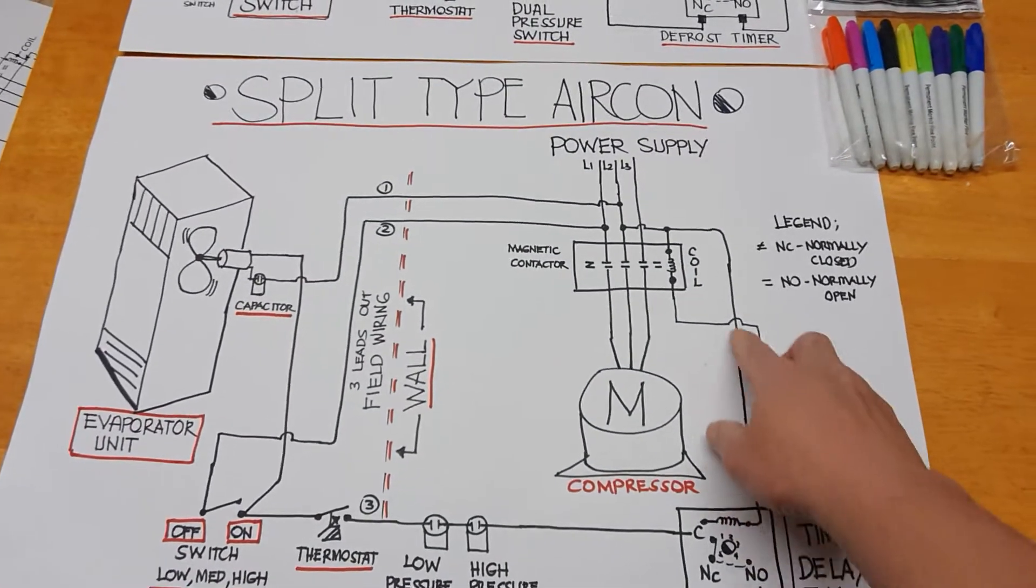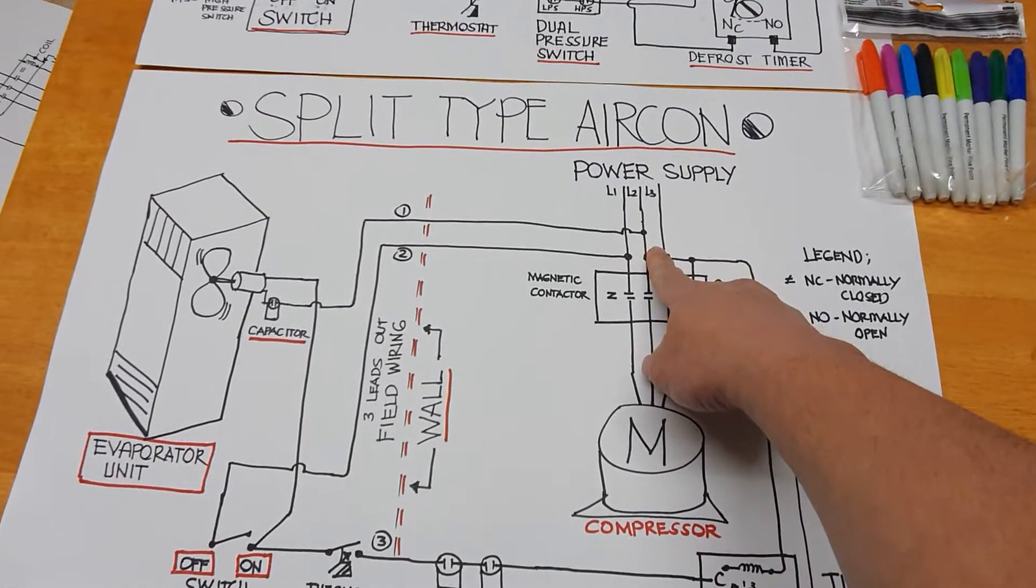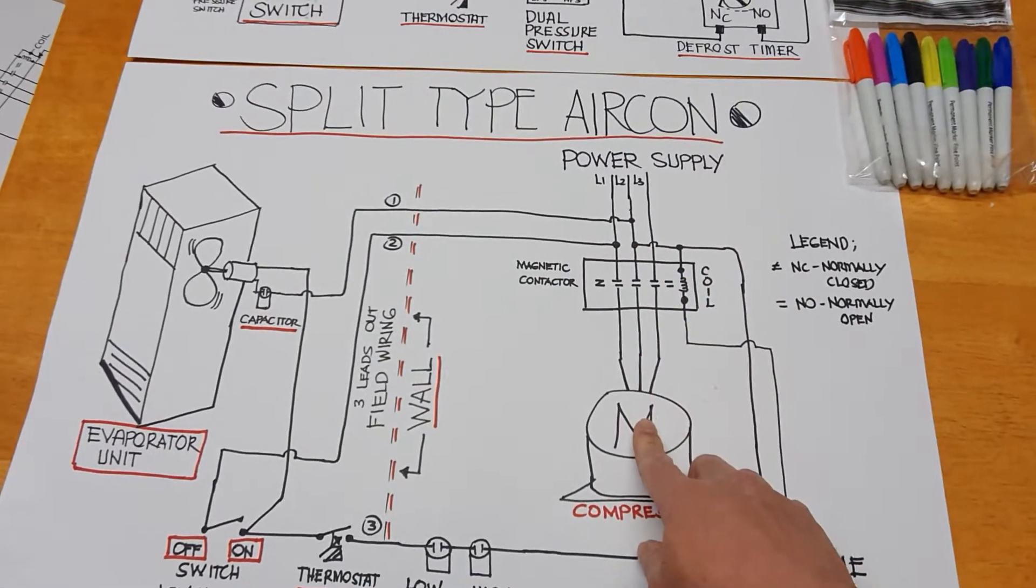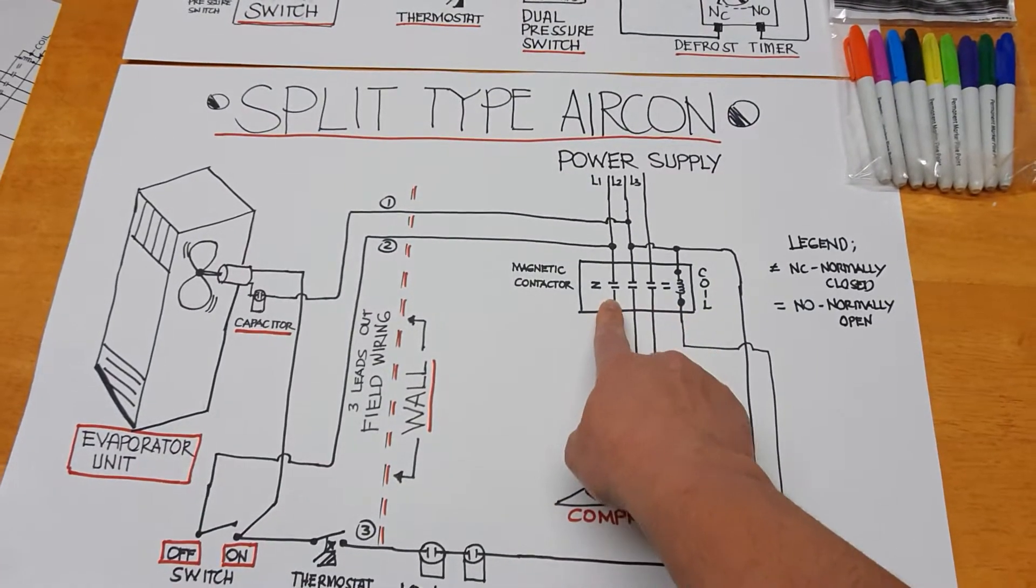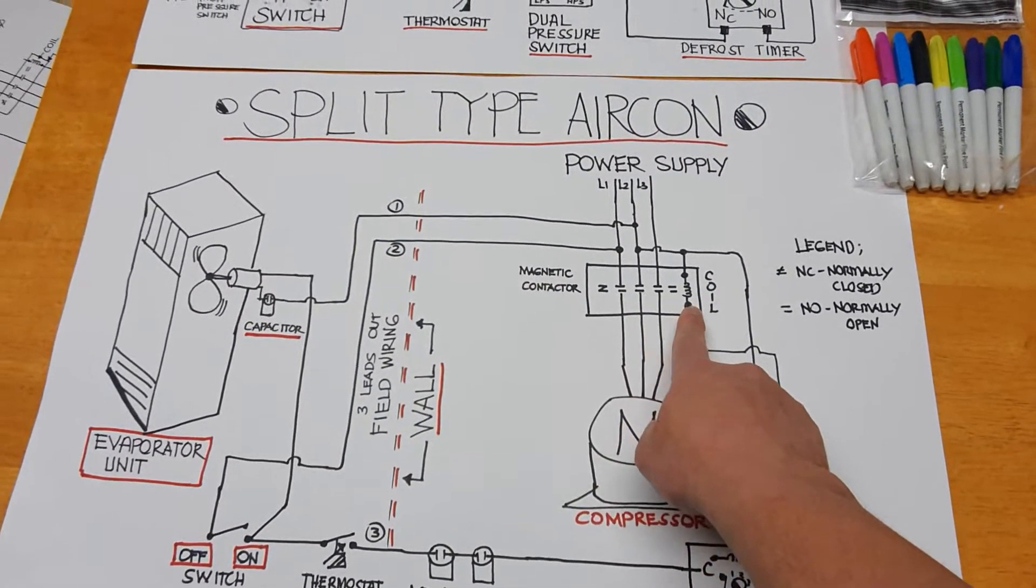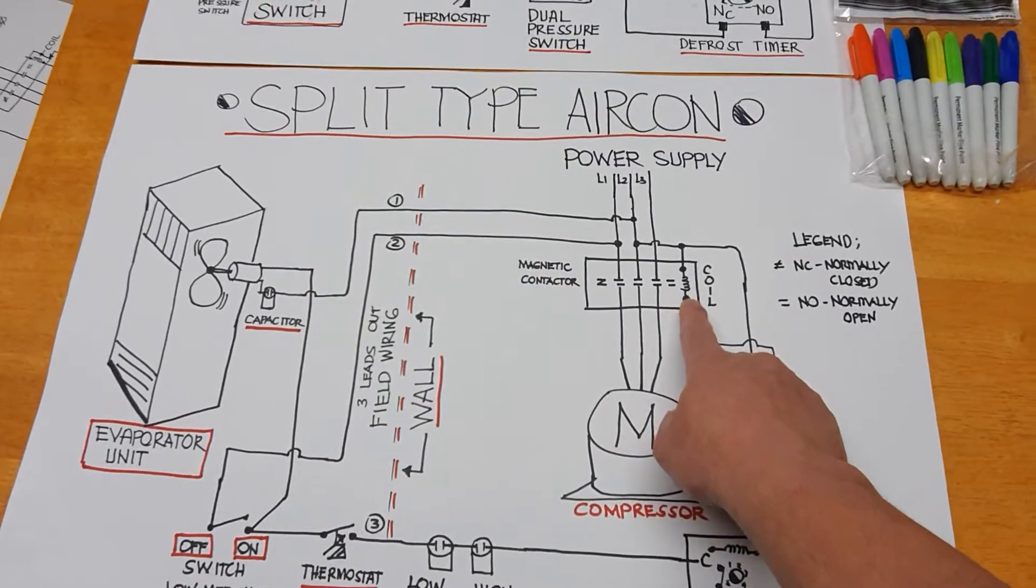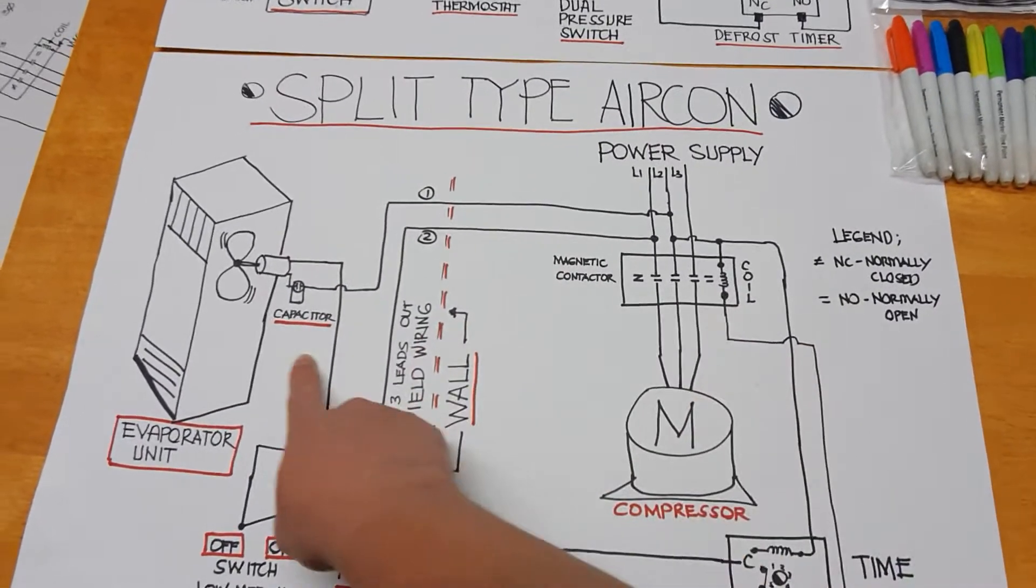Now this is the power supply. I'm doing this for a three-phase connection. This is the compressor, this is the magnetic conductor, this is the coil of the magnetic conductor, this is the evaporator unit.